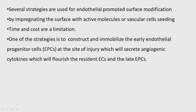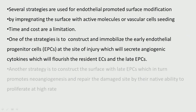Now let us look at some biomaterials used in the ocular region — that means the eye. As you can see, the retina is here, you have the optic nerve which connects with the brain, this is the posterior chamber, this is the anterior chamber, we have the iris, the cornea, and the lens. There are a lot of biomaterials used in this area of the eye.